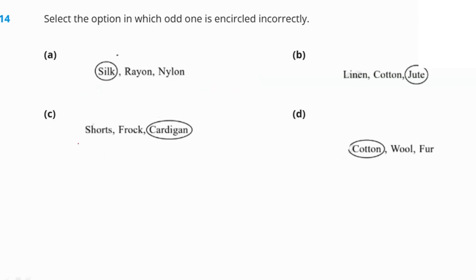Select the option in which the odd one out is encircled correctly. Rayon and nylon are synthetic, so silk is correctly circled in one option. However, option B is incorrectly encircled because linen, cotton, and jute are all natural fibers obtained from plants — none of them is the odd one out. So option B is our answer.